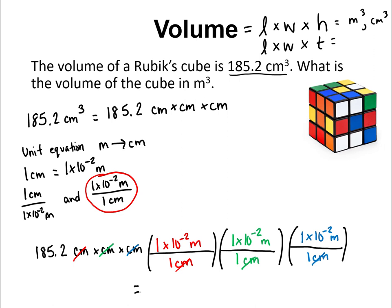Put that into your calculator and let me know what you get — give it to me in scientific notation. The answer is 1.85 times 10 to the minus 4 meters cubed.